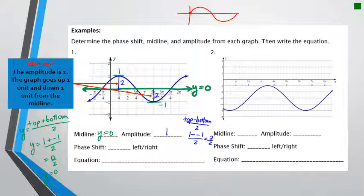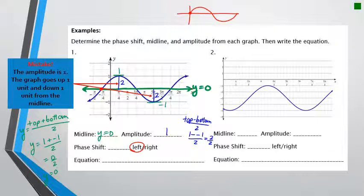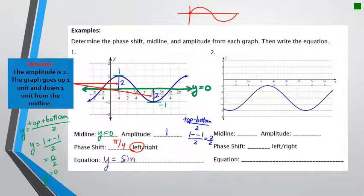The point closest to the origin that crosses zero is a little to the left — at negative π/4. That tells us the graph shifted left by π/4. Writing the equation: amplitude is 1 so we just write sine; moving left means we use plus, so we have sine(x + π/4); midline is zero so no additional term. The final answer is y = sin(x + π/4).